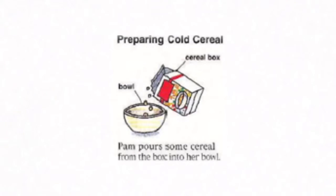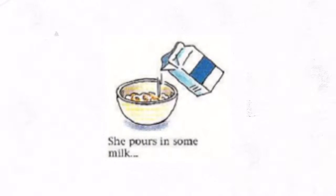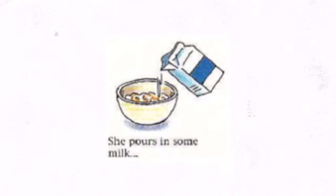Preparing cold cereal is very simple. Here's how to do it. Pam pours some cereal from the box into her bowl, then pours in some milk. You can use skim milk or nonfat milk, low fat milk which is one percent, reduced fat milk which is two percent, or regular plain old milk.